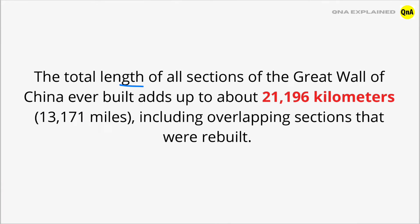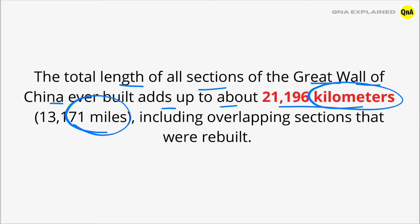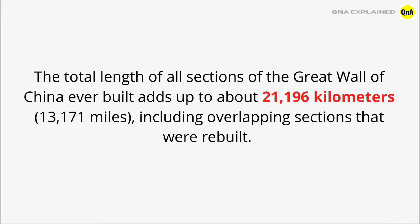The total length of all sections of the Great Wall of China ever built adds up to about 21,196 km, which means 13,171 miles, including overlapping sections that were rebuilt.